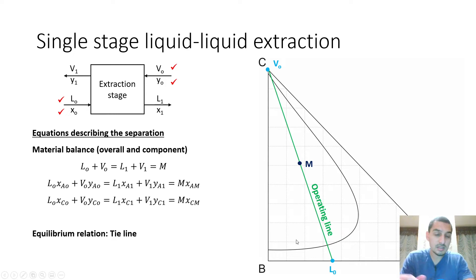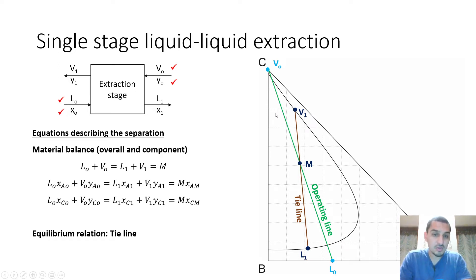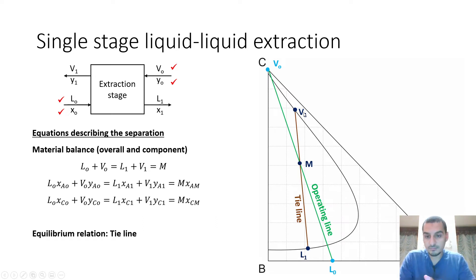Once point M is in the two-phase region, it will separate spontaneously into two immiscible phases with different compositions. The equilibrium relation — the tie line — cuts the raffinate layer at L1 and intersects the extract layer at V1. V1 and L1 are the outputs. We can calculate their flow rates and compositions using the lever arm principle. Compositions are easily read from the graph for Xc, Xa, Yc, and Ya for both points.